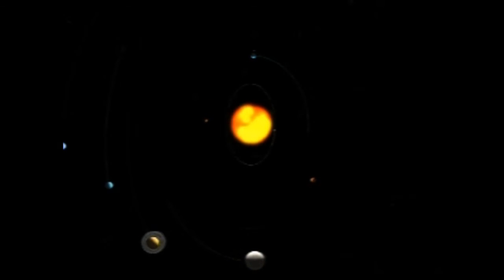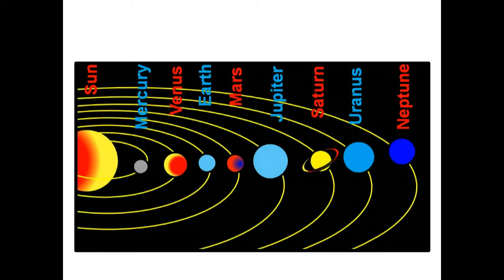But is Earth the only planet? No. There are seven other planets revolving around the sun too. The planets which are revolving around the sun and their moons together form the solar system. Let's learn about the solar system.